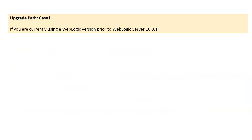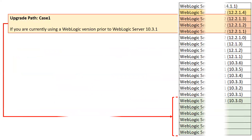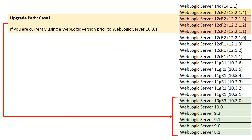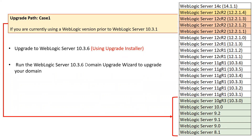Upgrade path for case one: if you are using WebLogic version prior to 10.3.1 — meaning 10.3.0, 10.0, 9.2, 9.1, etc. — you must first upgrade to WebLogic 10.3.6. For upgrading any version prior to 10.3.1, you will get an upgrade installer. Just like a fresh installer, you download it, run it, and it prompts you to provide your existing Oracle home directory. Once you provide that, it will upgrade your WebLogic server to version 10.3.6.